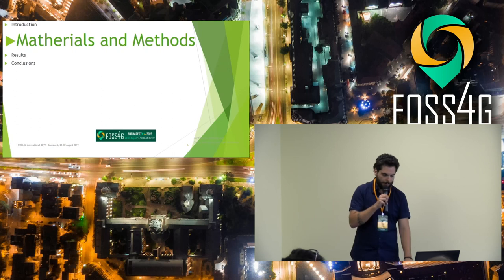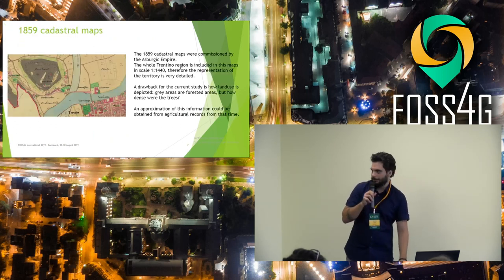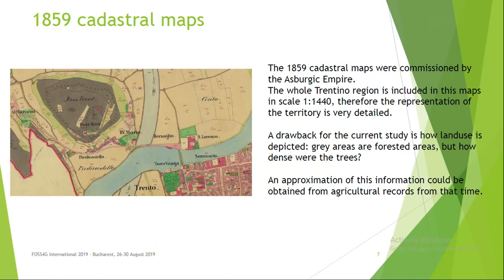Now we will see some materials and methods. As was previously said, software is beautiful but useless without data. The first data in the time series is the 1859 cadastral maps, which were originally made by the Habsburg Empire in order to cadastre the old territory of their peripheral regions. In fact, these maps are the same here in Trentino as they are in Czech Republic, Poland, Hungary, and all the neighboring regions of the Habsburg Empire.